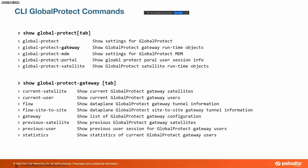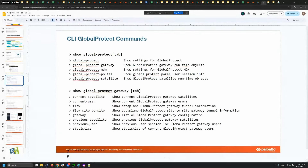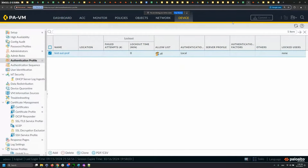GlobalProtect commands on the firewall: 'show global-protect global-protect' shows the settings. 'Show global-protect global-protect gateway' checks your gateway runtime objects. You also have MDM portal and satellite options. For current and previous users, you also have that option in the GUI — go to gateway and then remote users to see current and previous users.